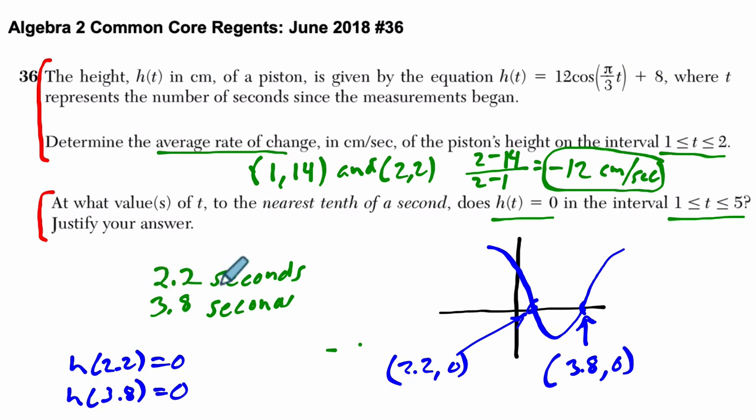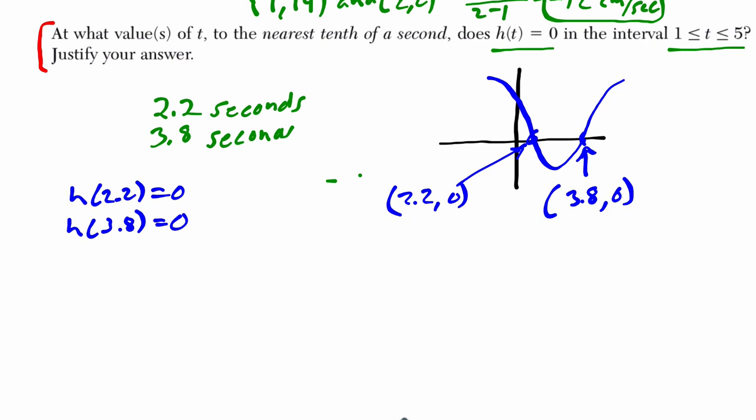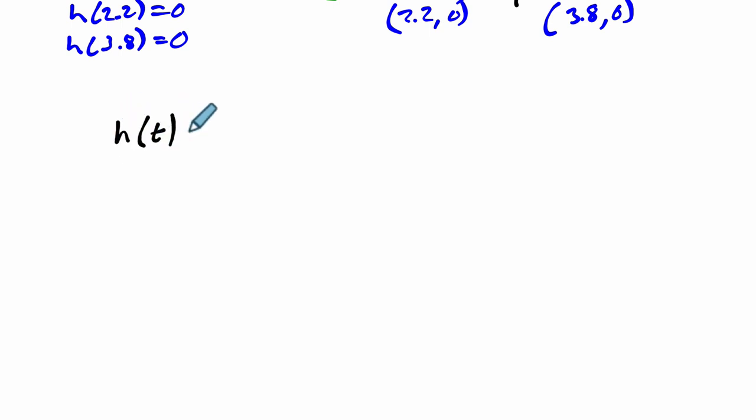Now, let's say you had to solve this algebraically. In other words, you can only use the graphing calculator to know what the answers are, but you must show the algebra. How do we do that? We've got h(t) = 12cos(πt/3) + 8. We want to know when the height is 0. So this is the equation we're solving: when does this function have a height of 0?